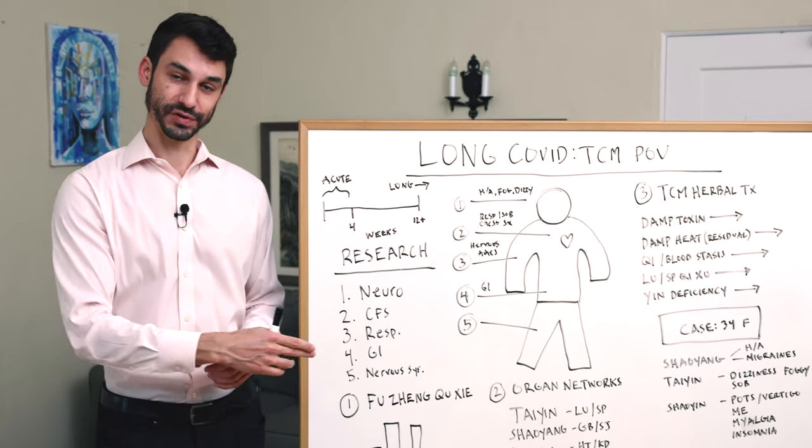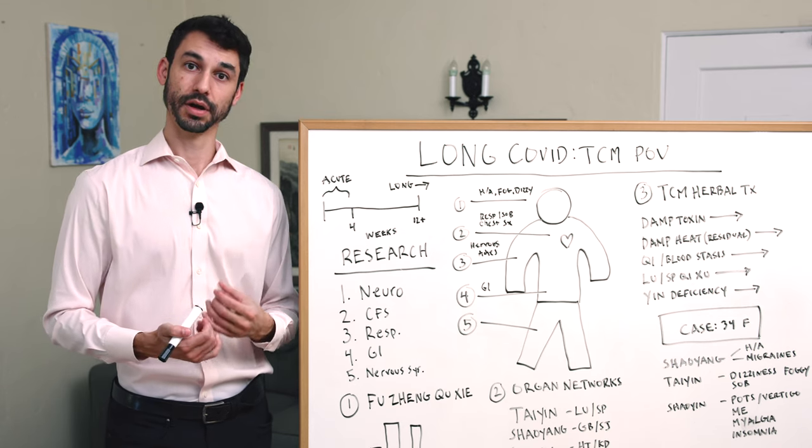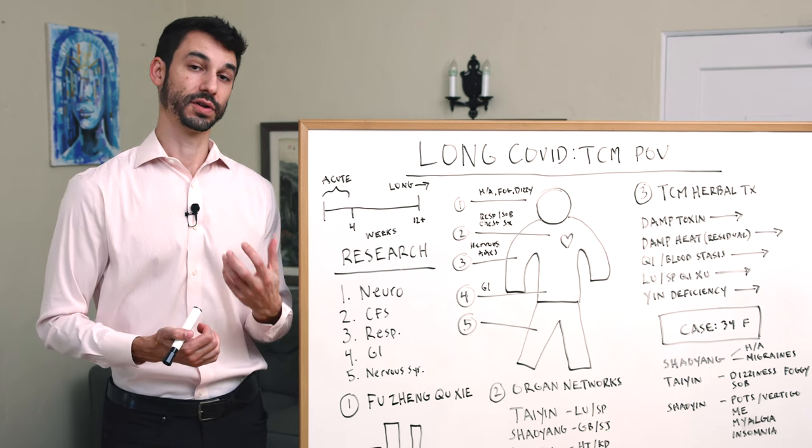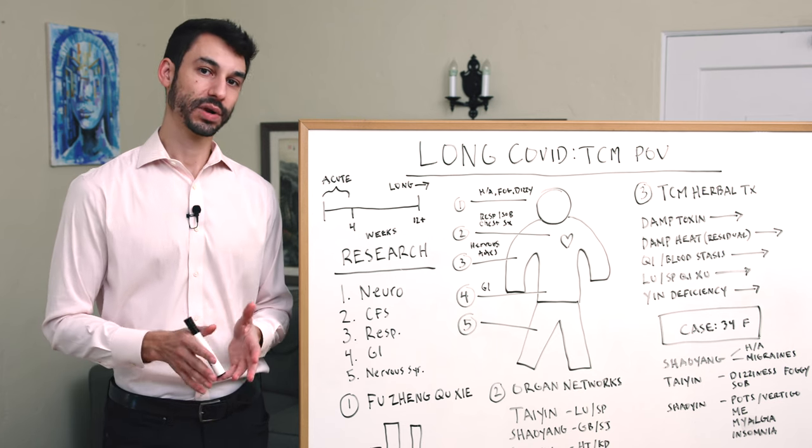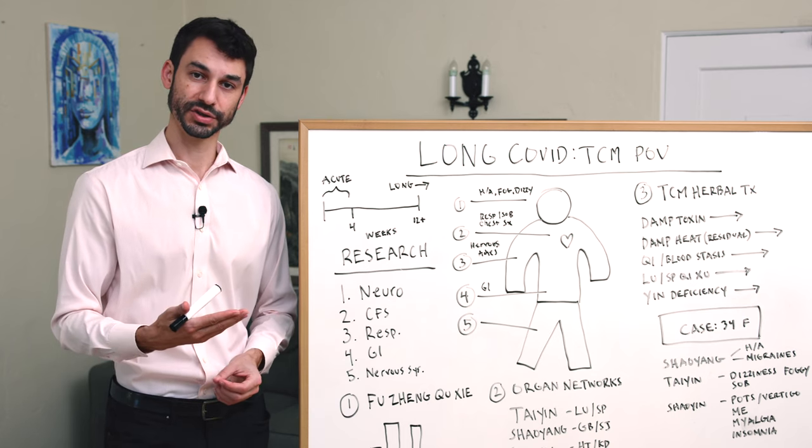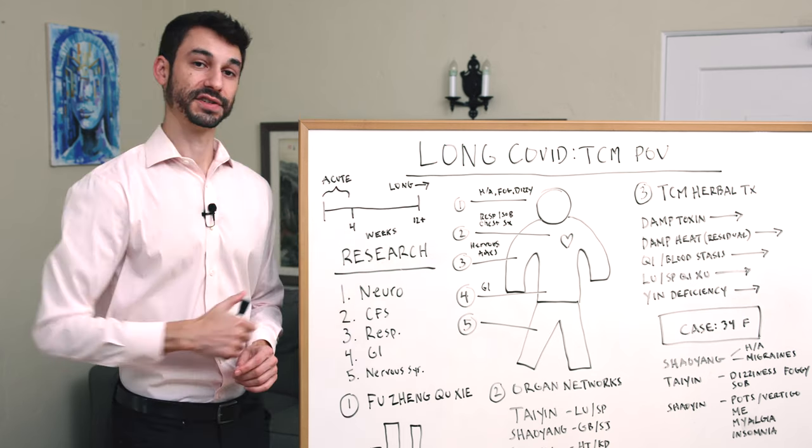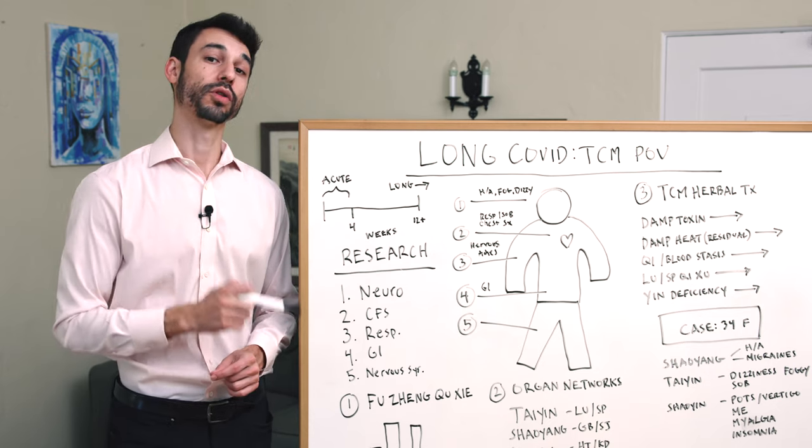In terms of respiratory issues, we see shortness of breath, chronic sputum production. People are coughing or they're still wheezing or clearing the throat for months and months after. Mostly what I see is that they're coming in because of chronic phlegm production, and we're going to talk about damp toxin, one of the most common TCM diagnoses for Long COVID.